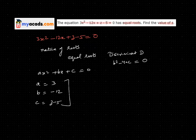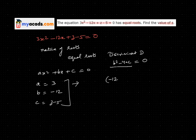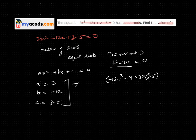Now I will put these values in my discriminant formula. The discriminant formula is b squared minus 4ac. So b is minus 12, minus 12 whole square minus 4 times a, which is 3, times c, which is z minus 5, equals 0.